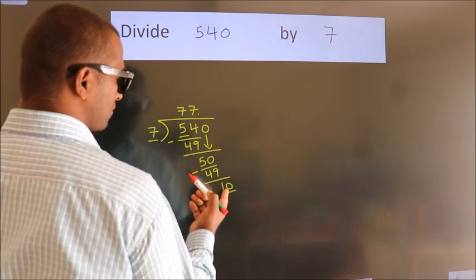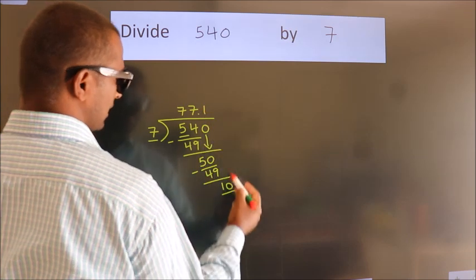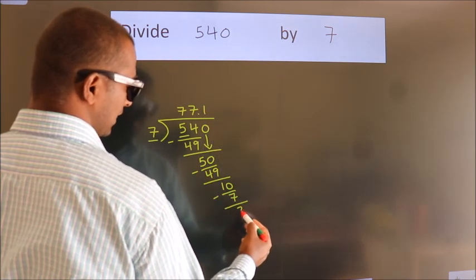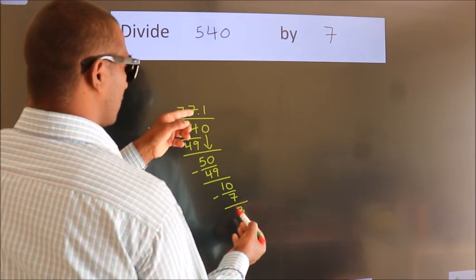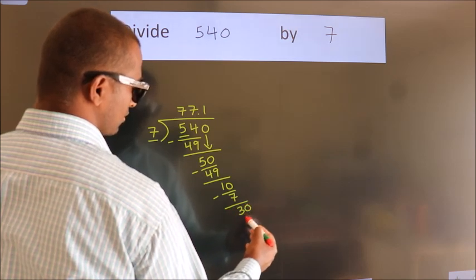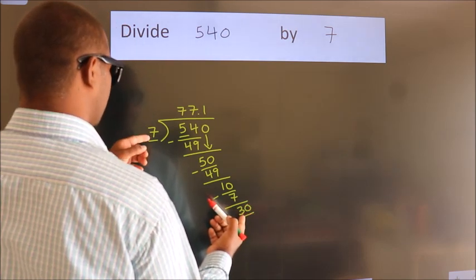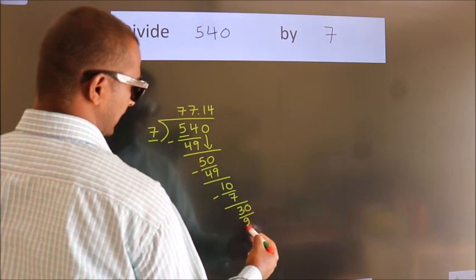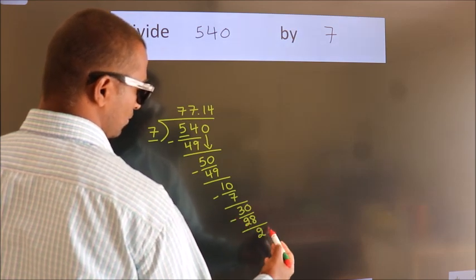A number close to 10 in the 7 table is 7 ones, 7. Now we subtract. We get 3. After this, we already have the decimal, so directly take 0. So 30. A number close to 30 in the 7 table is 7 fours, 28. Now we subtract. We get 2.